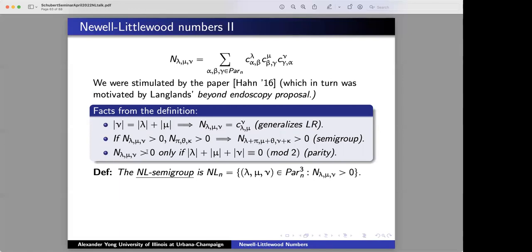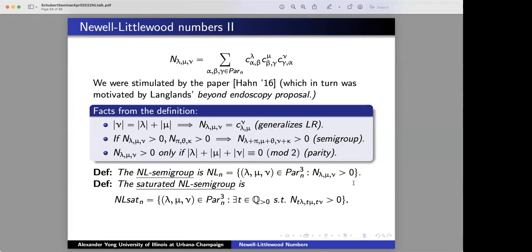A necessary condition for the NL number to be positive is that the sums of the size of the partitions is even. So from these facts, let's again, in analogy of the LR case, define the semigroup. NL semigroup is just going to be triples for which the NL coefficient is positive. And similarly, let's define a saturated NL semigroup,